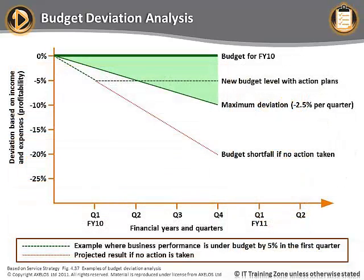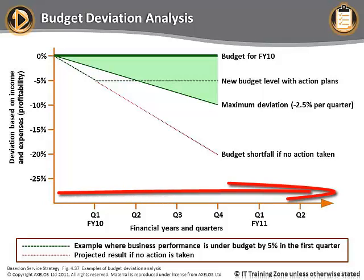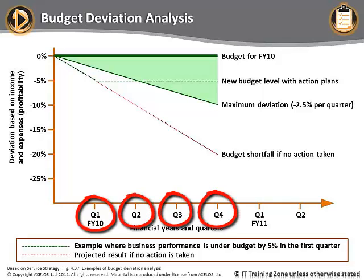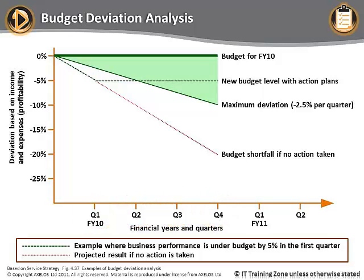The diagram on your screen shows an example of a budget deviation analysis. The horizontal axis of the graph represents time. You can see financial year 10 is divided into four quarters, which is a common control period used by financial management. At the end of each control period, the difference between the actual profitability and forecast profitability is calculated. This figure is known as the budget deviation. The y-axis on the graph represents the budget deviation as a percentage.